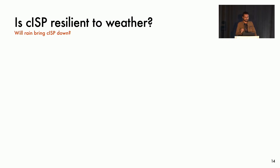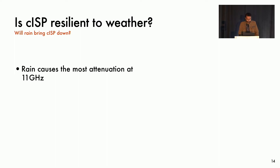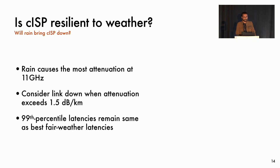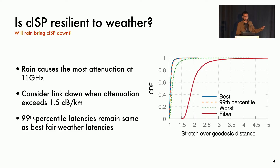Let us see if bad weather can significantly degrade overall CISP performance. At the 6 to 11 gigahertz range, rain is the biggest factor for attenuation. For this analysis, we stay conservative and consider a link completely down if attenuation exceeds a threshold of 1.5 decibels per kilometer. We gather weather data for the U.S. for a year and simulate links going up and down based on precipitation. We plot a CDF of the best, 99th percentile, and worst latency inflation of CISP over the year. Stretch stays very low even in bad weather because as some CISP links go down, other low latency links are still up. Even the worst latencies are not significantly downgraded and stay much lower than fiber latencies.